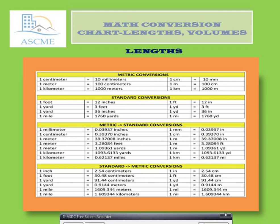In the metric-to-extender conversion, one millimeter is equal to 0.03937 inches. One foot is equal to 30.4 centimeters, and one foot is equal to 2.5 — the values are shown in the chart.